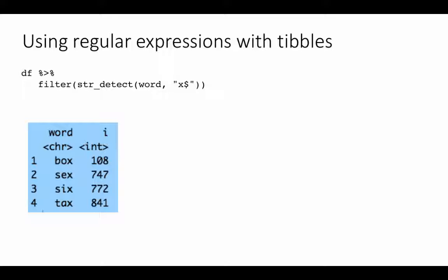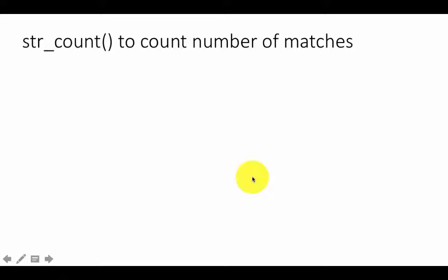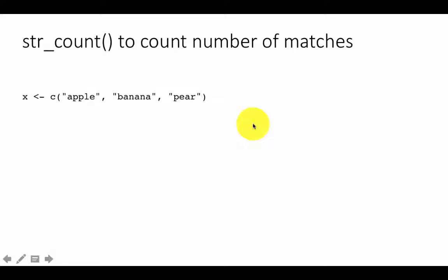That's one kind of operation we can do when we have our data within tables and want to use regular expressions. Another function is `str_count`, which tells us how many matches occurred. Let's take a simple example first with a vector — apple, banana, pear — and then we'll move to a table context.